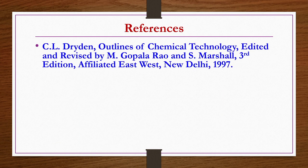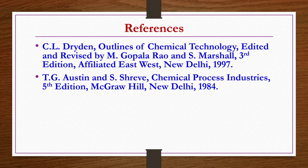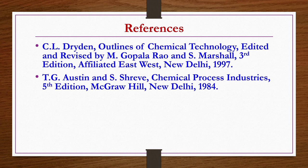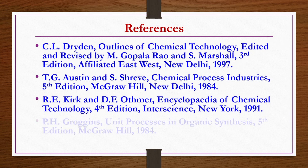References for today's lecture: Outlines of Chemical Technology by C.L. Dryden, edited and revised by Gopalrao and Marshall, 3rd edition; Chemical Process Industries by Austen and Sriv, 5th edition; Encyclopedia of Chemical Technology by Kirken Atmer, 4th edition; Unit Processes in Organic Synthesis by Grogin's, 5th edition. Thank you.